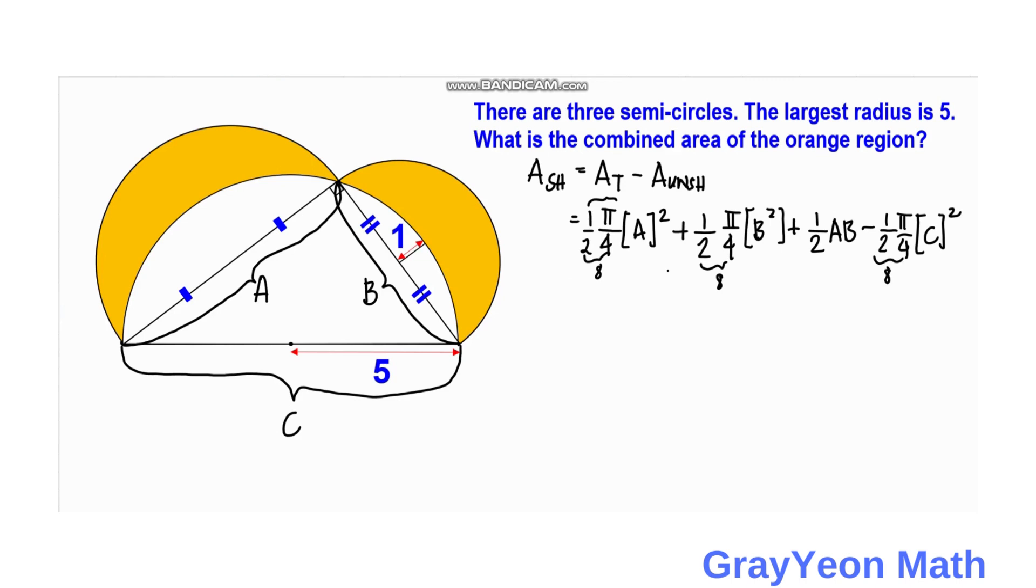Okay, so next is we group the terms with similar coefficients. So we can actually factor out pi over 8. And inside this pi over 8, we have A squared plus B squared minus C squared. And we do not let this 1 half AB to be in that group because there is no pi over 8. So, as you can see, this figure is a right triangle. So A and B are the legs of this right triangle. So A squared plus B squared is actually C squared. And we just cancel this. Okay, and this becomes 0.